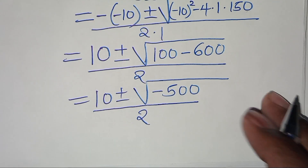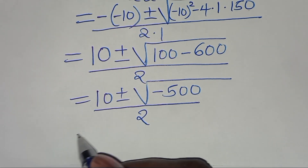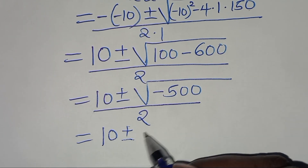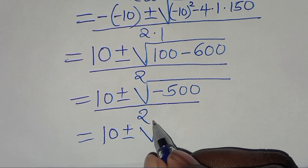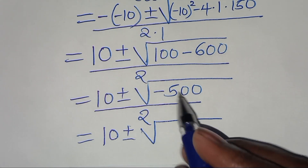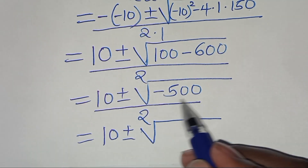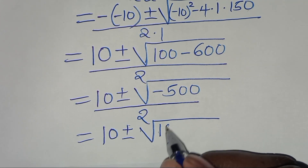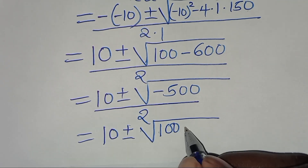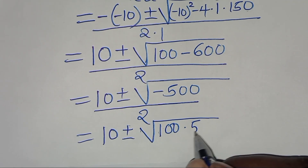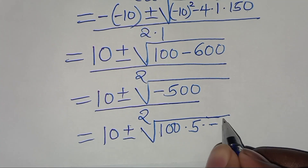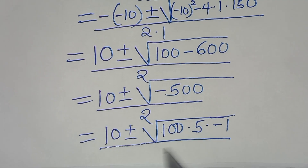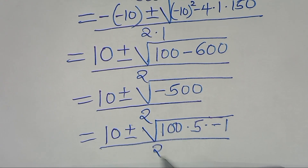We can express the square root of negative 500 as the square root of 100 times 5 times negative 1, all divided by 2.